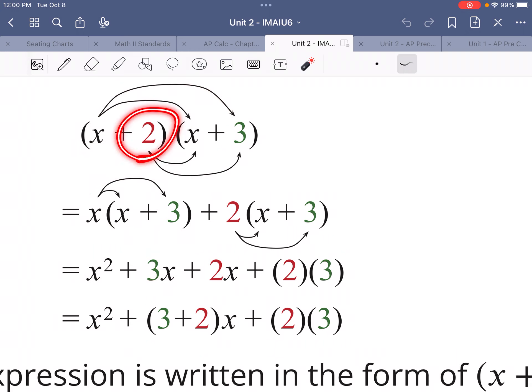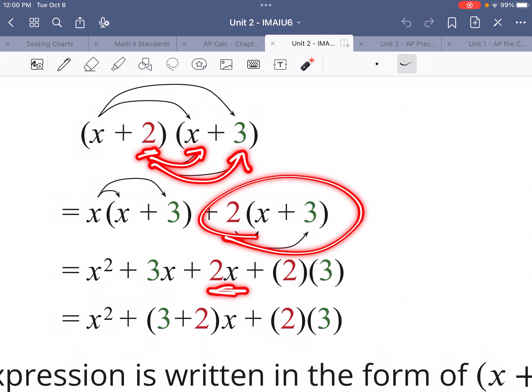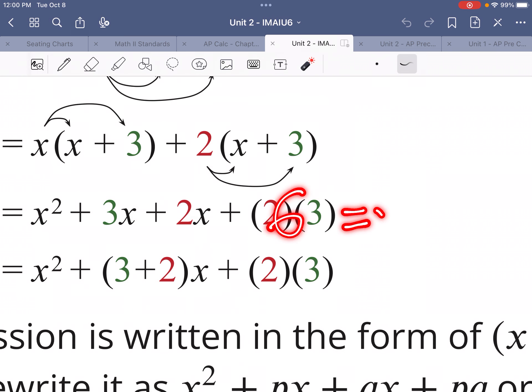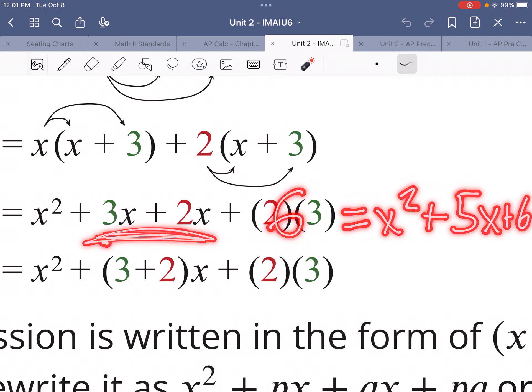Once we do that, then we would look at the second number and say, I need to multiply this by that and also by that. And I would get 2 times x plus 3, which is 2x plus 2 times 3, which is 6. Then simplifying this, we've got x² plus 3x and 2x are like terms, so we have 5x and then an extra 6 at the end.